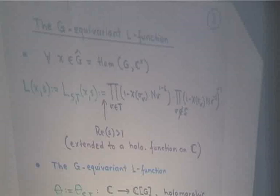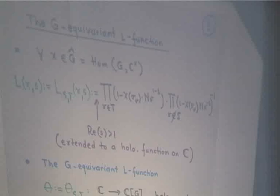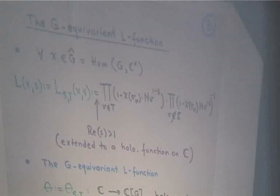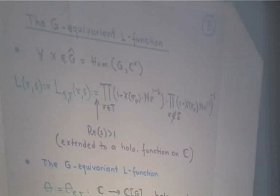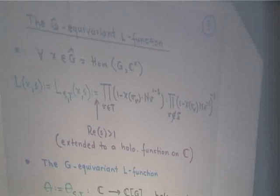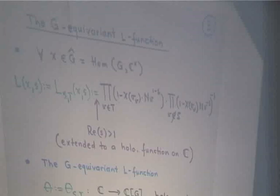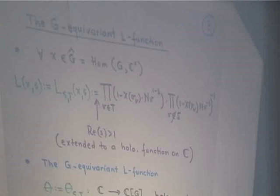The infinite product is over all primes v not belonging to S of (1 − χ(σ_v) |v|^{−s}), where σ_v is the Frobenius associated to v. On Re(s) > 1 this is absolutely and uniformly convergent on compact subsets, giving an analytic function. You multiply that by a finite product over all primes v in T of (1 − χ(σ_v)|v|^{1−s}). Miraculously, all these holomorphic functions can be extended to holomorphic functions on the entire complex plane.